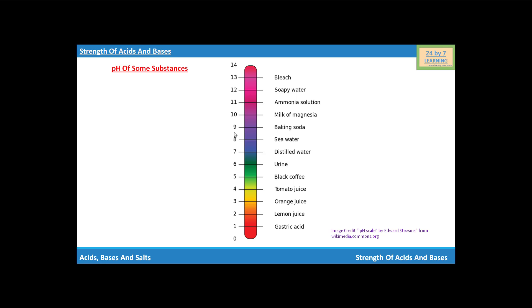Baking soda that we use in our daily life has a pH value of 9, and sea water will have pH value 8, while distilled water will have pH value 7.